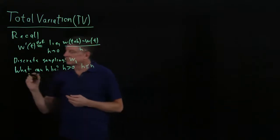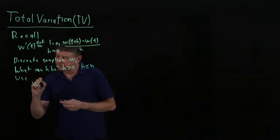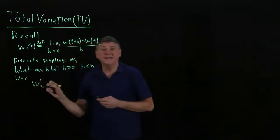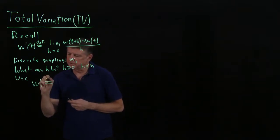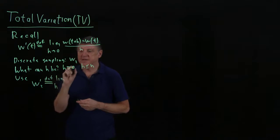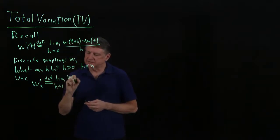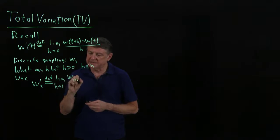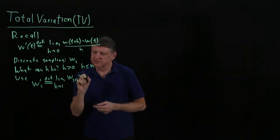So what we'll do is we'll use this. We'll say that w prime for an indexed or discretely sampled vector, we'll define that as the limit. Now h can't go to zero, h has to go to one of w. Now instead of t plus h, that's subscript i plus h. Now we can see there's going to be some indexing problems, minus w sub i, and we'll divide that by h.